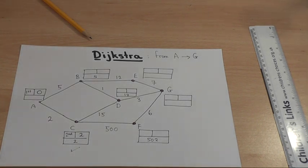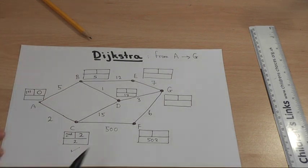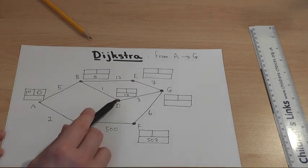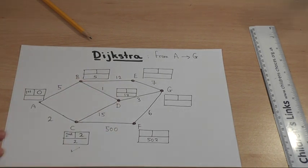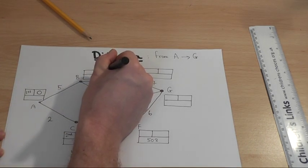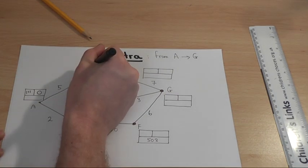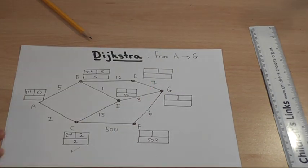Forget about all that. I then look for the next lowest temporary label. I've got a 17, a 502, and a 5. And again, unless there's some magic route which takes me negative distance back there, 5 is now the next lowest. So, 5 is made permanent, and that's the third node I've made permanent.